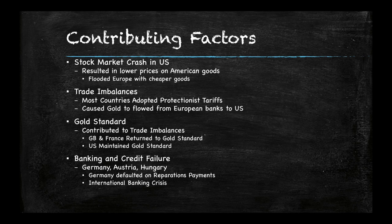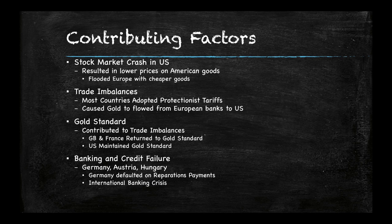There was a trade imbalance which resulted from this and already existed. Most countries began closing their borders to cheaper products from other countries to try to boost their own economy, and this caused gold to flow from European banks to the United States, which also hurt. The fact that they were on the gold standard contributed to trade imbalances, because places like Great Britain and France on the gold standard made their currency stronger. The United States tried to maintain the gold standard, but eventually we left it, which undervalued our currency a bit, although put more in circulation.